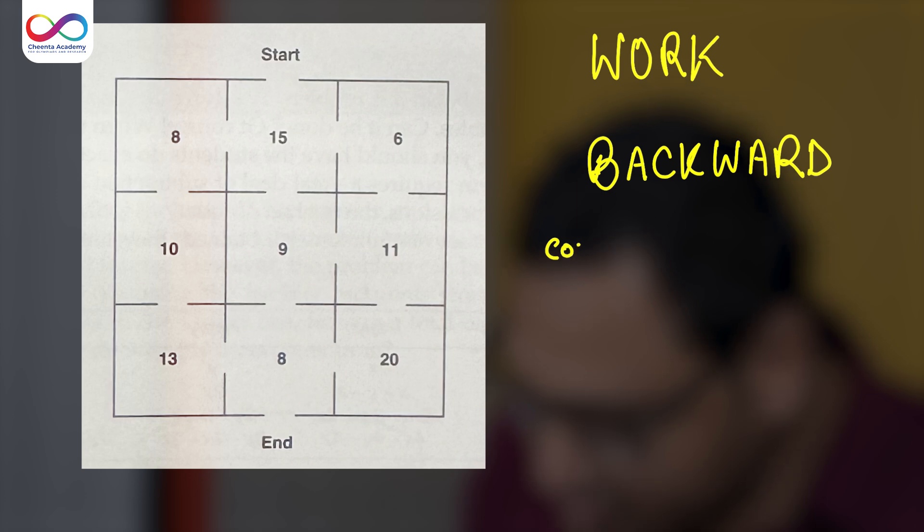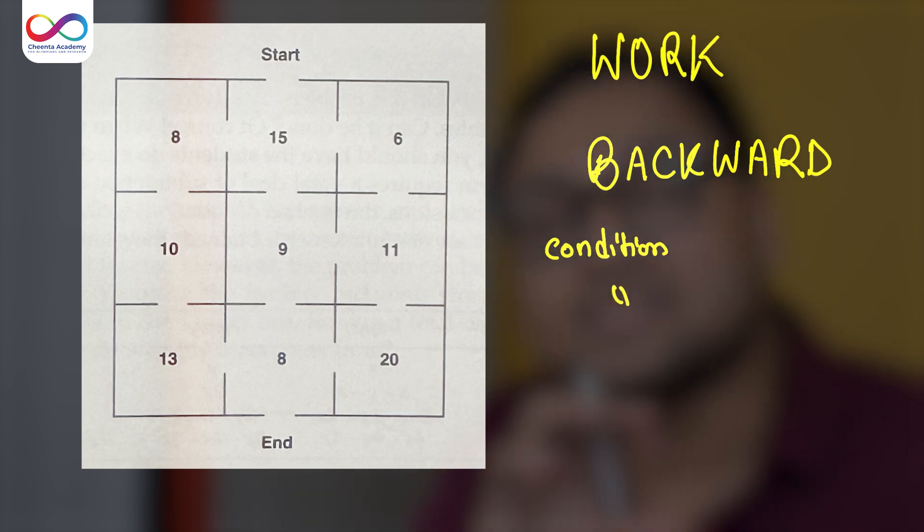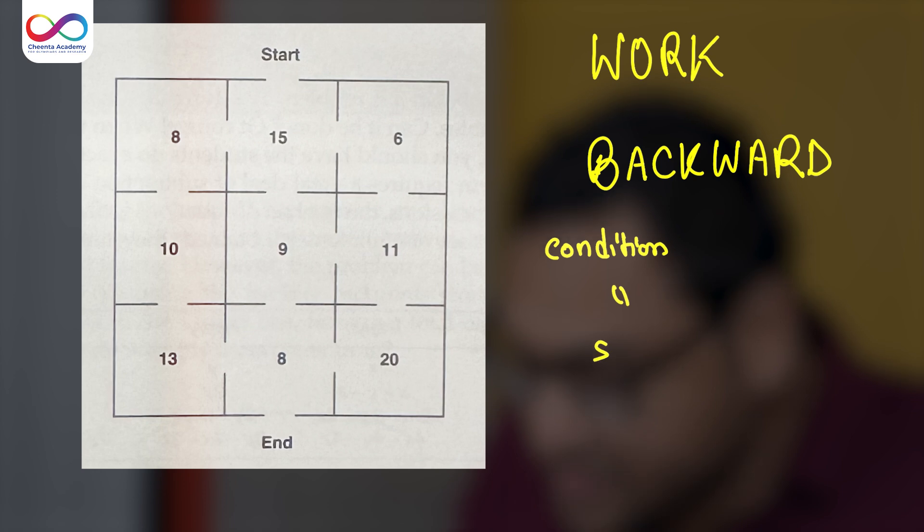What is the condition? The condition is that the sum of the boxes that you go through should be 50. The sum should be 50.